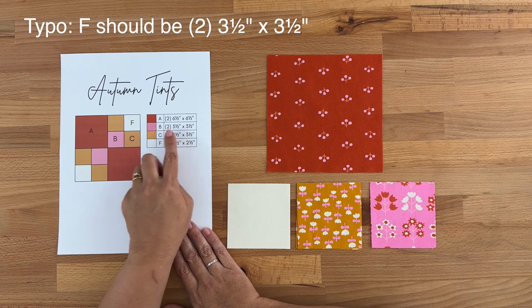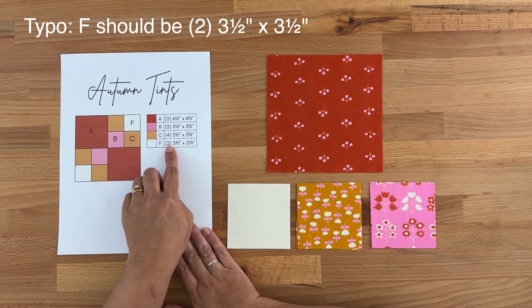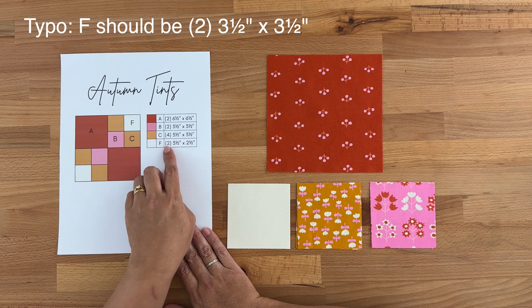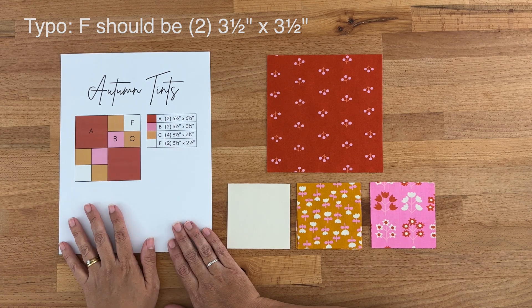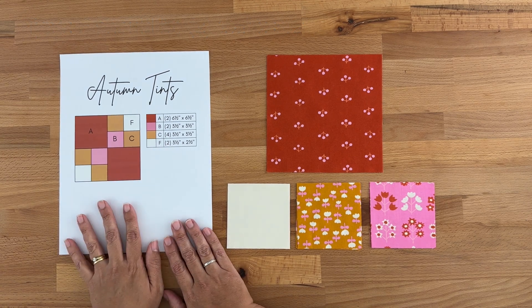For all the rest of the pieces you need to cut them at three and a half inches by three and a half inches squared, and then here it tells you how many pieces—two, four, and two. Really nice and simple quick block to make this month.